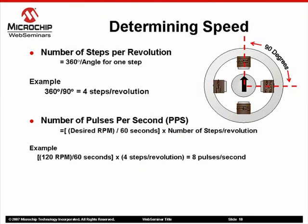Let's take a moment and talk about speed of revolution, or RPM. We can determine how fast to apply the individual steps by following a few simple equations. First, we need to determine how many steps actually make up a complete 360-degree revolution. Since we have a 90-degree step angle, it will take four steps for a complete revolution. Next, we need to know how many pulses, or steps, we will apply per second to achieve the desired RPM. Therefore, we divide our desired RPM by 60 seconds, then multiply the quotient by the number of steps in a complete revolution. The product provides us with the number of steps required per second to obtain the desired RPM.